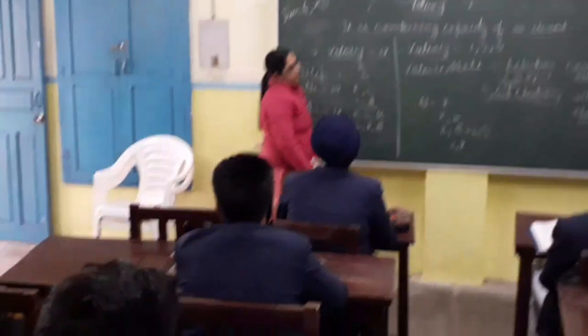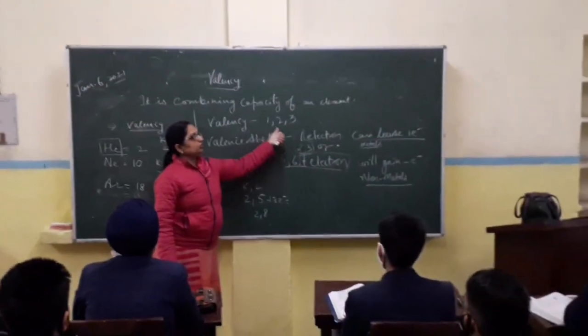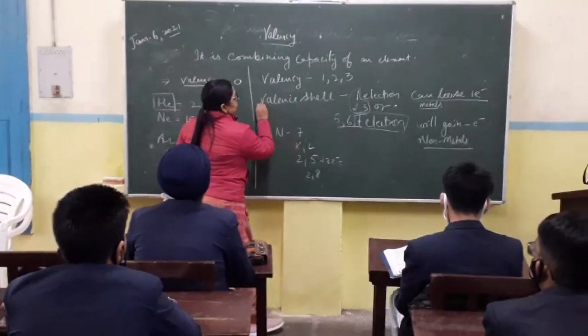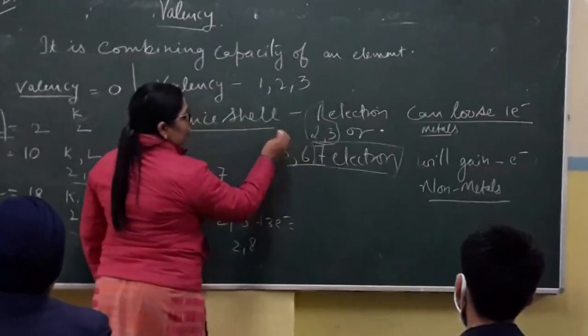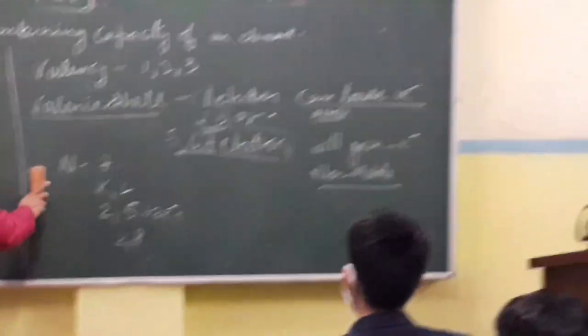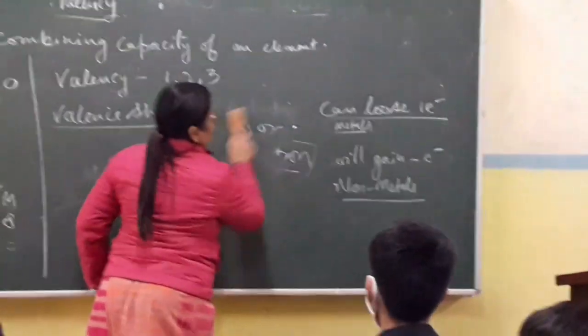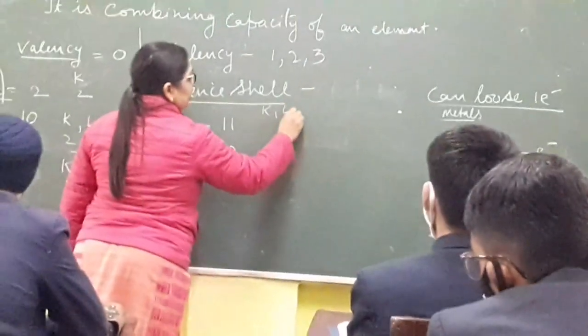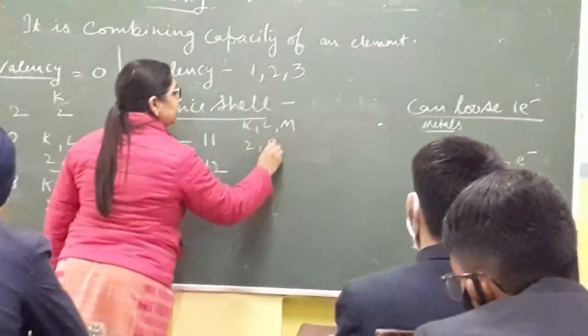Now let's talk about the elements whose valency is one, two, or three — those elements whose valence shell has one, two, or three electrons. Let's take examples: sodium, magnesium, aluminum. Atomic numbers: 11, 12, 13. Their configurations are — sodium: K, L, M — 2, 8, 1. Magnesium: 2, 8, 2. Aluminum: 2, 8, 3.